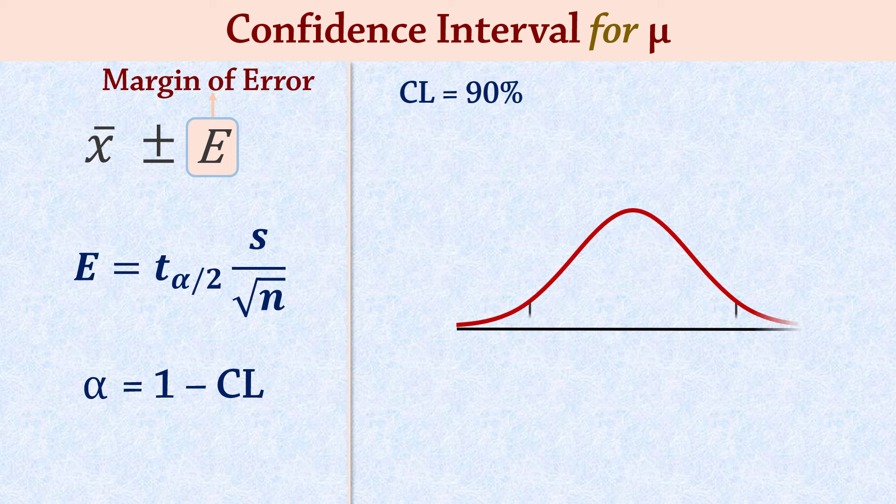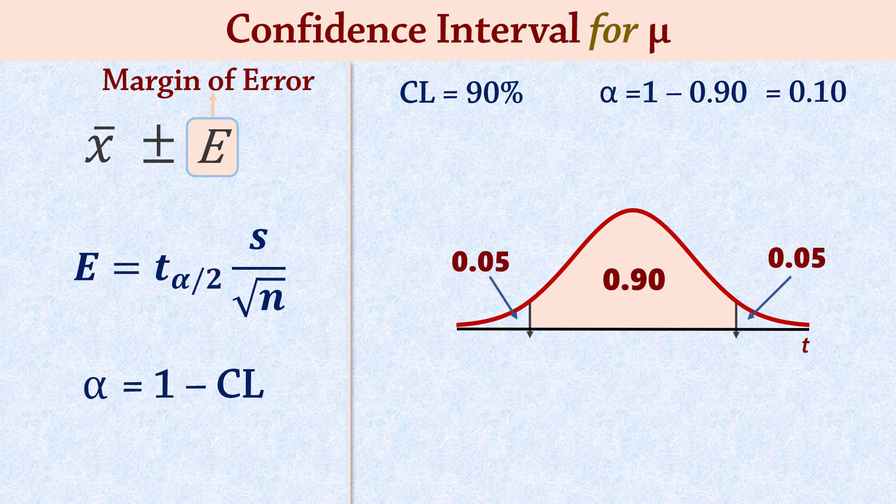So, for a 90% confidence level, alpha will be 0.1, and that is divided equally into the two tails. The values corresponding to these boundaries of the confidence interval are the critical values.